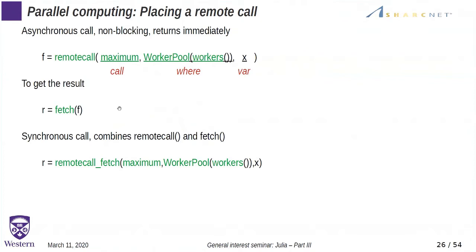Placing a remote call: you can call the function remote_call, which is the same as spawn_at. The first argument is the function you want to call, the second argument is where — on what worker or set of workers — and the last is the argument variables. The remote call is non-blocking; it returns immediately and returns a handle for the future. In order to get the result, call fetch. You can also combine remote_call and fetch together to make a blocking call using remote_fetch, which combines the remote call and the fetch together.